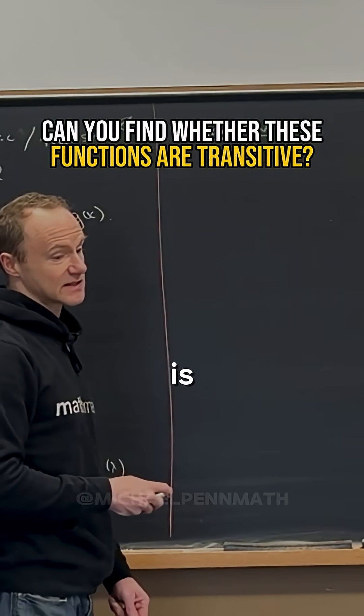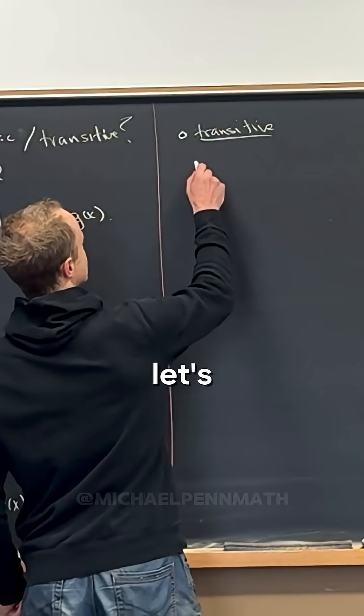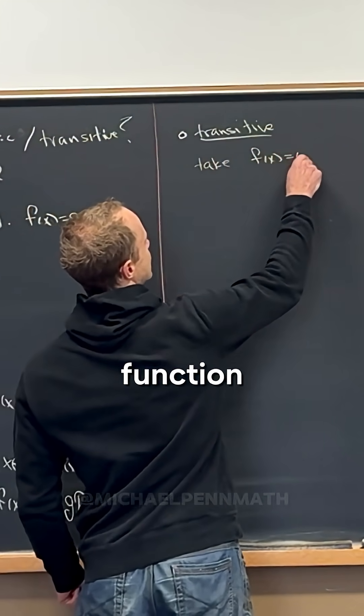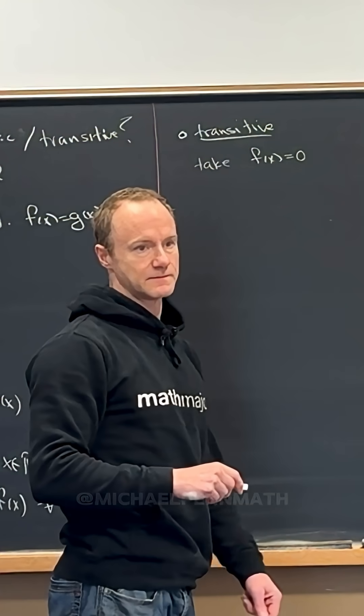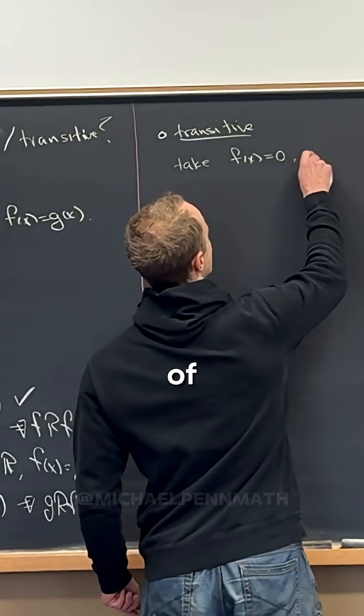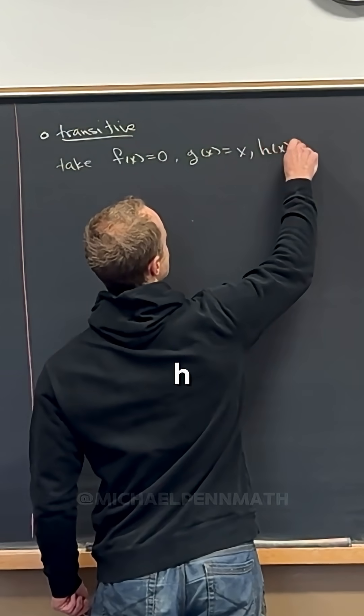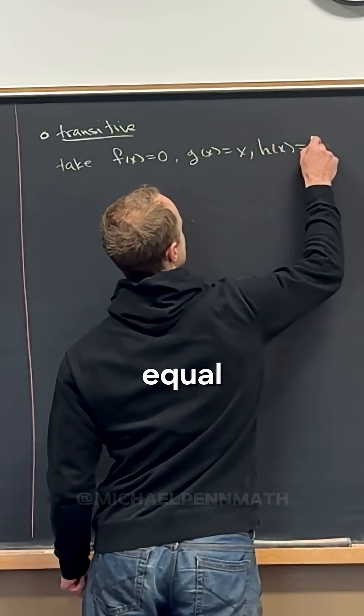So here's what I think is kind of a silly way. Let's take f of x to be the function that's always equal to zero. Let's take g of x to be the function that's equal to x, and let's take h of x to be the function that's always equal to one.